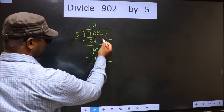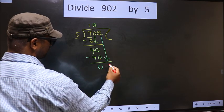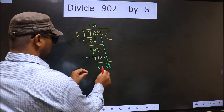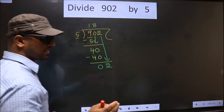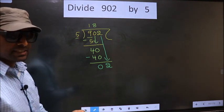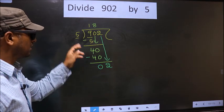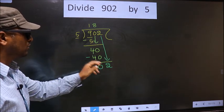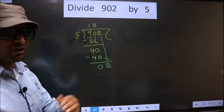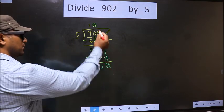Now you bring down the next number, so 2 down. This is where the mistake happens. Here we have 2, and 5. 2 is smaller than 5, so what many do is they put a dot and take 0 here, which is wrong.